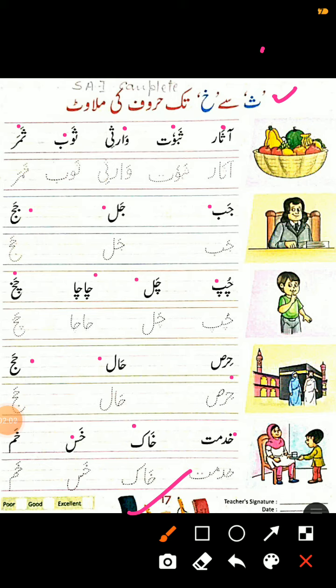یہ ہے page number 17. ابھی آپ کو جن حروف کی reading کرائی گئی ہے، آپ ان سبھی حروف کی اچھی طرح سے tracing کریں گے۔ تمام students اس بات کا دھیان رکھیں کہ جو حرف جس line میں بنا ہوا ہے، آپ کو same اسی line میں بنانا ہے اور یہ one page writing بہت اچھی طرح سے complete کرنی ہے۔ (This is page 17. Trace all the letters read aloud. Keep each letter within its designated line and complete the full page writing neatly.)